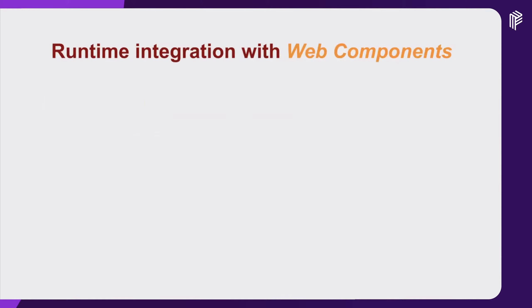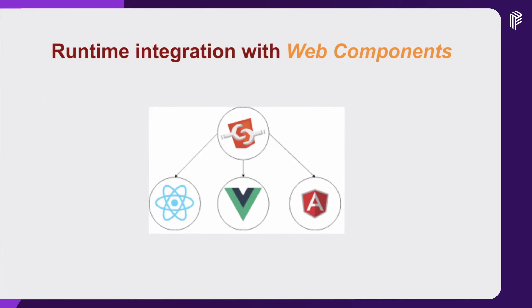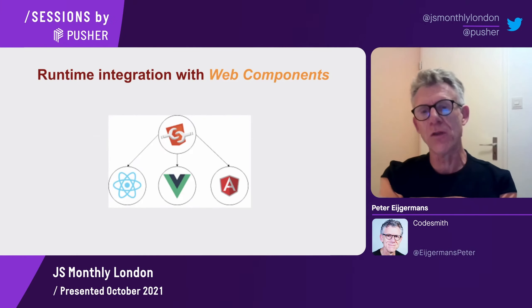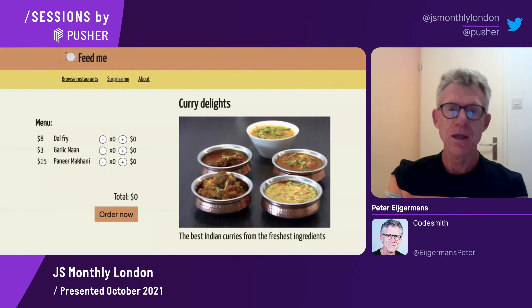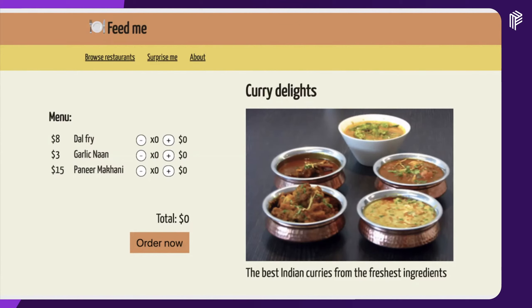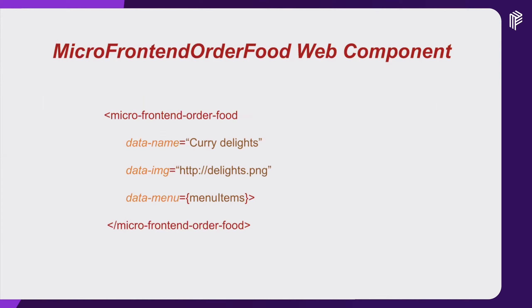Runtime integration: here we bundle our application in the frontend. You can do that with a lot of techniques — globally you can use iframes, which is a very old technique, or web components, which is the newer one. Drawbacks of runtime integration with iframes: it is difficult to build integrations, it's an old technique, and it's very challenging to make your page fully responsive. So we step over to web components. In this context, a web component is a technique to implement a micro frontend, and a micro frontend is a type of architecture.